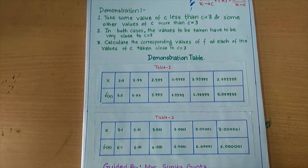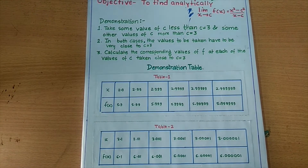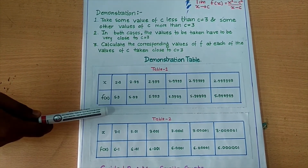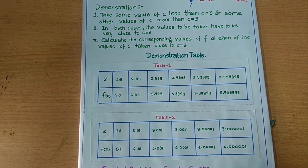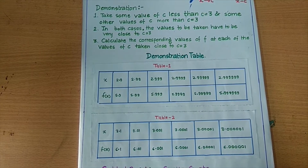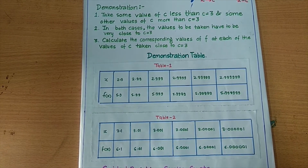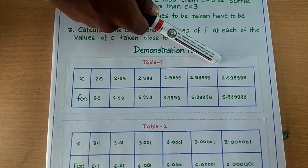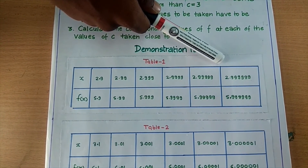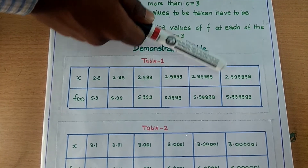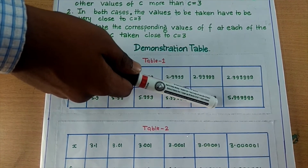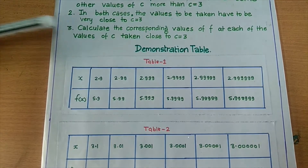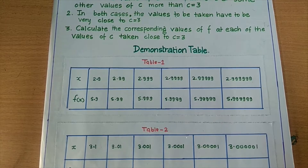If we take some values less than 3, it means x tends to 3 from the left as in Table 1. Our function f(x) is coming closer and closer to 6. As x equals 2.9999, then f(x) equals 5.9999, which comes closer and closer to 6.